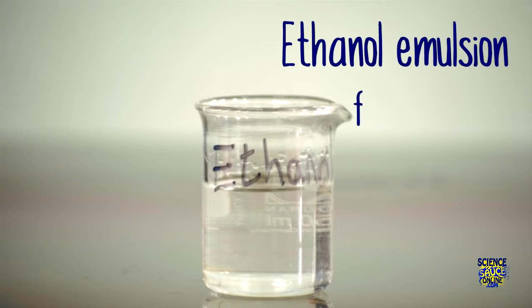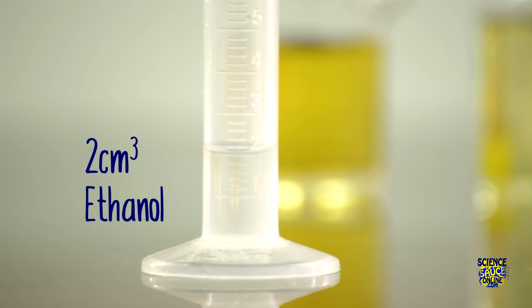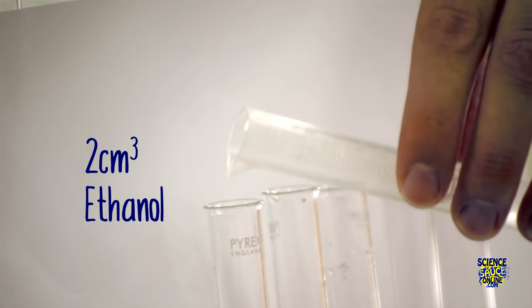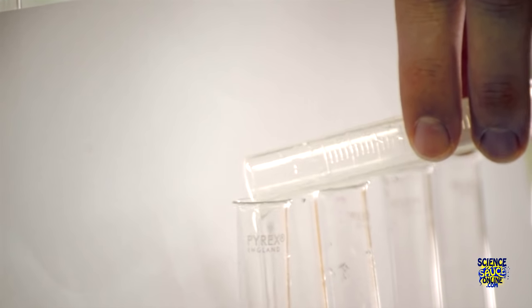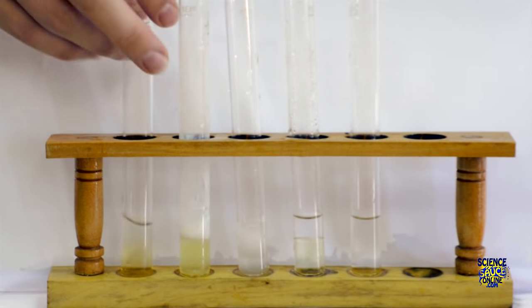The ethanol emulsion test is the test for the presence of fats. First you need to measure out two centimeters cubed of ethanol and pour that into each of your samples. With each one you need to shake it vigorously.